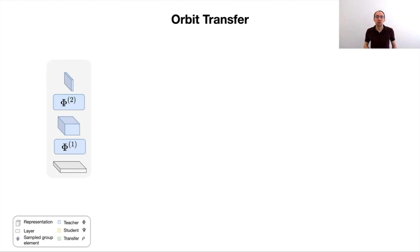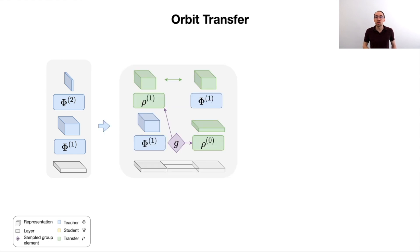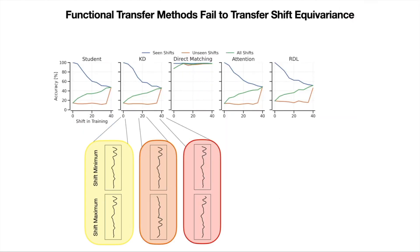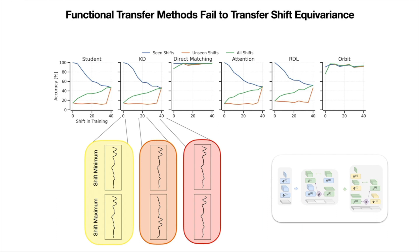To avoid this problem of not capturing the right equivariance, we propose ORBITTransfer, a novel method that directly learns the group representation rho that the teacher is equivariant to. We do this in an intermediate step. The resulting group representation captures the teacher's equivariance and is finally used to guide the student towards the same equivariance. When we apply ORBIT to our 1D toy task, we see that we successfully transfer the equivariance.